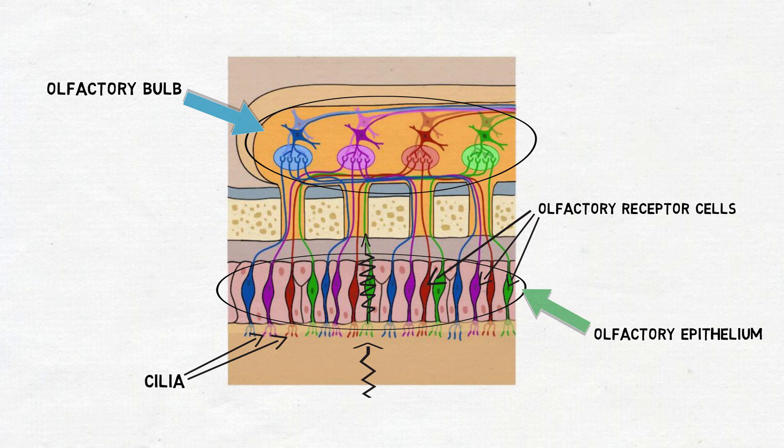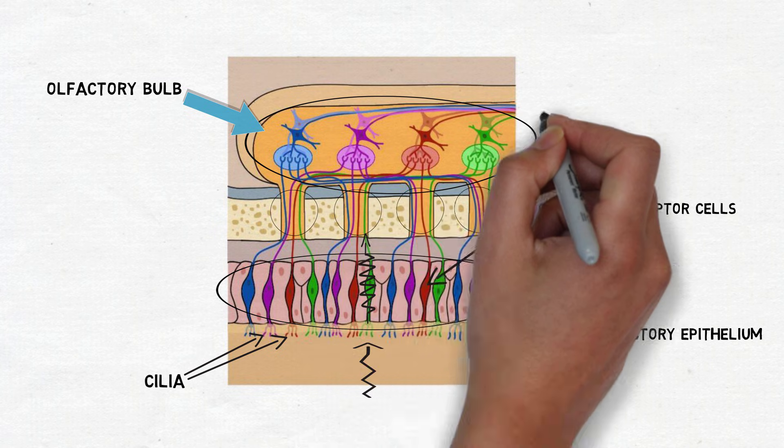These axons that travel from the olfactory epithelium to the olfactory bulb together make up the first cranial nerve.